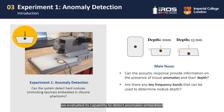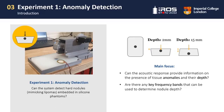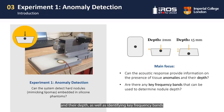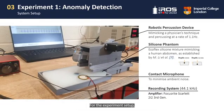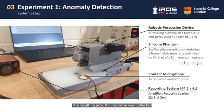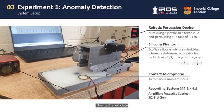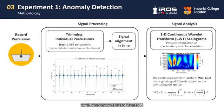In the first experiment, we evaluated its capability to detect anomalies embedded in silicon phantoms mimicking a human abdomen. Our main focus was to understand whether acoustic data could provide information on the presence of tissue anomalies and their depth, as well as identifying key frequency bands where this information could be extracted from. For the experiment setup, we used the robotic device to percuss onto silicon phantoms. The resulting acoustic response was collected through a contact microphone placed on the phantom surface and recorded at a frequency of 44.1 kHz. The gathered data was then trimmed to a total of 1,688 individual percussion events between both silicon phantoms.